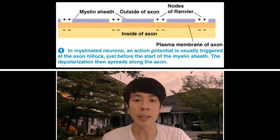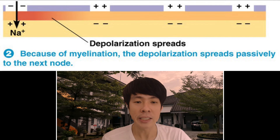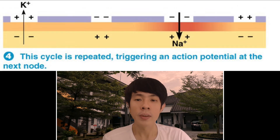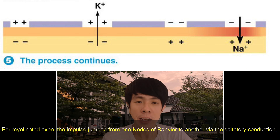In myelinated neurons, an action potential is usually triggered at the axon hillock, just before the start of the myelin sheath. The depolarisation then spreads along the axon. Because of myelination, the depolarisation spreads passively to the next node. The next node reaches its threshold and a new action potential is generated. This cycle is repeated, triggering an action potential at the next node. The process continues — it is said that the impulse jumps from one node of Ranvier to another node of Ranvier.